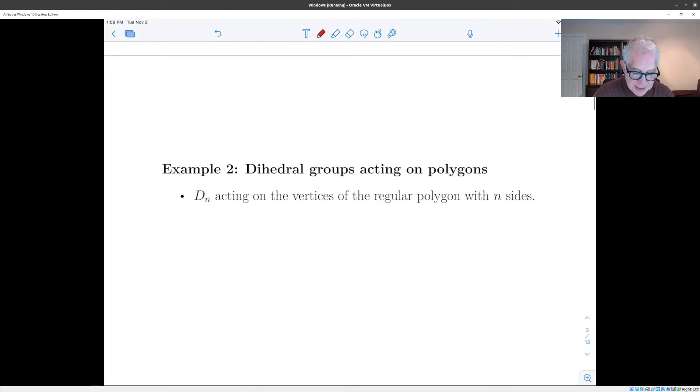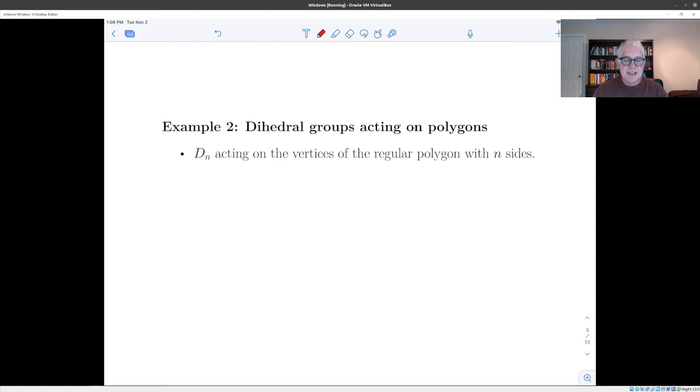Now, another example is something that we did at the very beginning where we thought about the dihedral group as the group of symmetries of a regular polygon. And we sort of constructed the dihedral group as the group of symmetries of the polygon. And now, if we think about that in reverse, we can think about the dihedral group as acting on the polygon. So